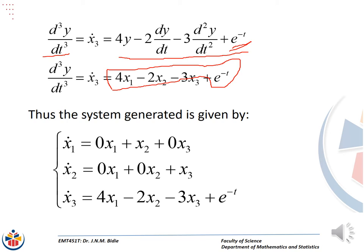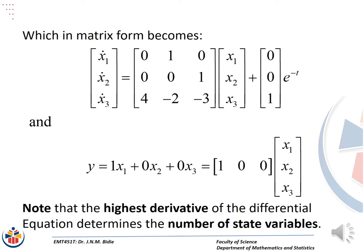Then we write this in matrix form. On the left hand side we have x1_dot, x2_dot, x3_dot. The coefficient matrix A has entries: row 1: 0, 1, 0; row 2: 0, 0, 1; row 3: 4, -2, -3. The input vector B has entries 0, 0, 1 — since x1_dot and x2_dot did not have e to the power negative t, and the last equation has coefficient 1.